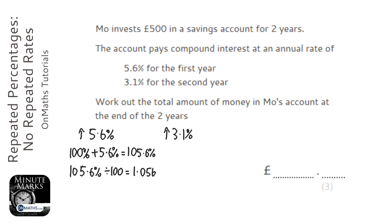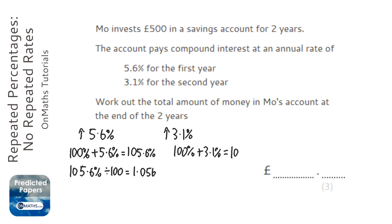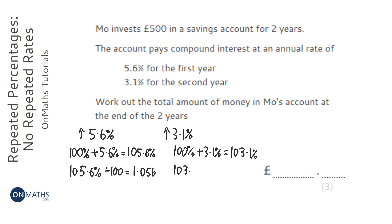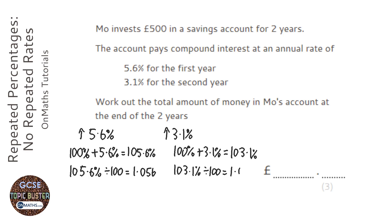I'll do the same with the 3.1%. We start off with 100%, we're increasing by 3.1%, so we end up with 103.1%. Then we divide by 100 to make it a decimal: 1.031.